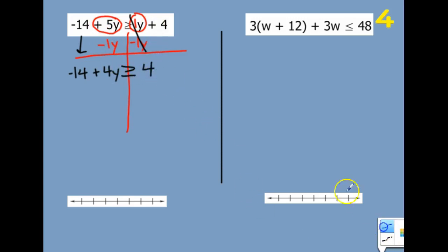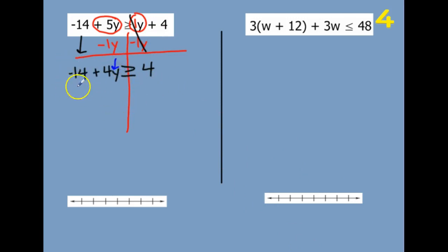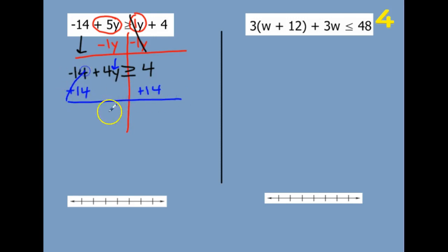I'm going to simply need to get the rest of the letter y all by itself. So get rid of addition or subtraction — I'm going to get rid of that subtraction by adding 14. Those go away. We have 4y is greater than or equal to — well, 14 plus 4 more is 18.